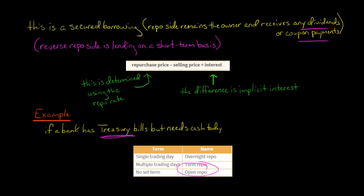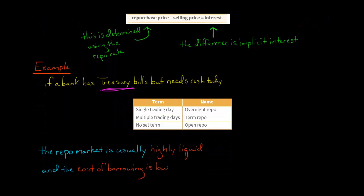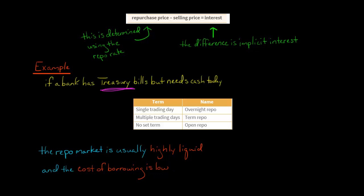In an open repo, there is no set term. In terms of characteristics of the market, the repo market is usually highly liquid — easy to find a counterparty and to engage in these repo arrangements, sell the securities, and have the repurchase agreement.